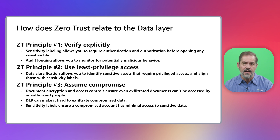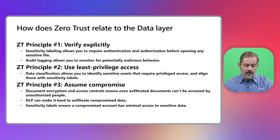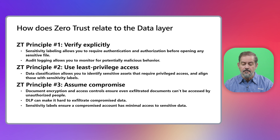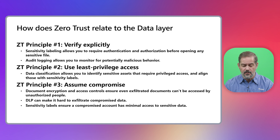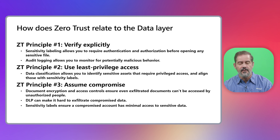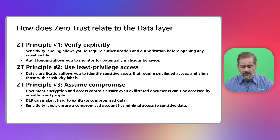You can also use DLP technologies to prevent exfiltration from happening in the first place — all data, including encrypted data, needs to be inspected before leaving the organization, and if it contains sensitive information that shouldn't leave or can only go to specific locations, that policy is enforced. Finally, you can minimize the chances of this happening by using sensitivity labels: if there is a compromised account, they won't be able to exfiltrate or access data to which they don't have access, such as financial statements.